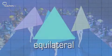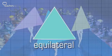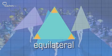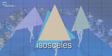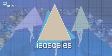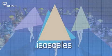Equilateral with three equal sides and three equal angles. Isosceles, just two equal sides and two equal angles.